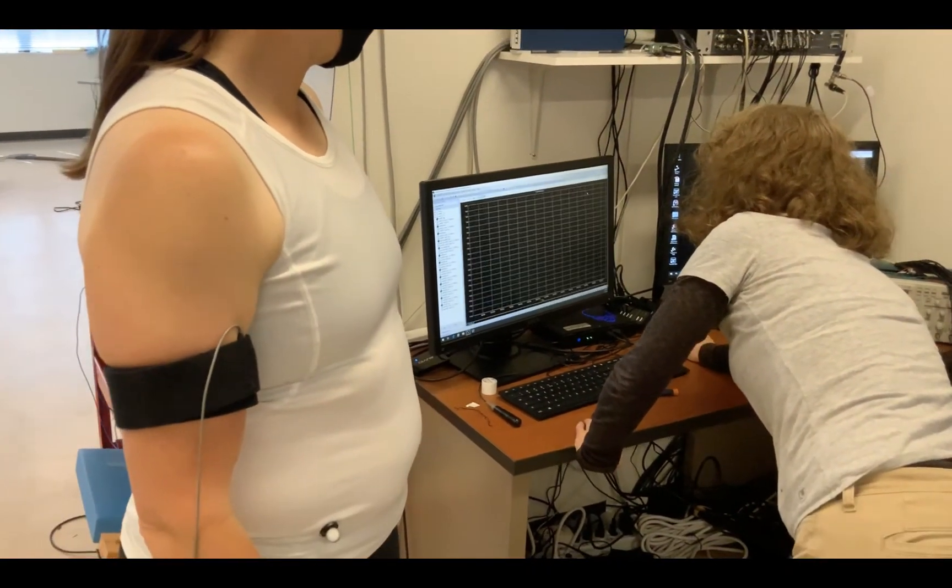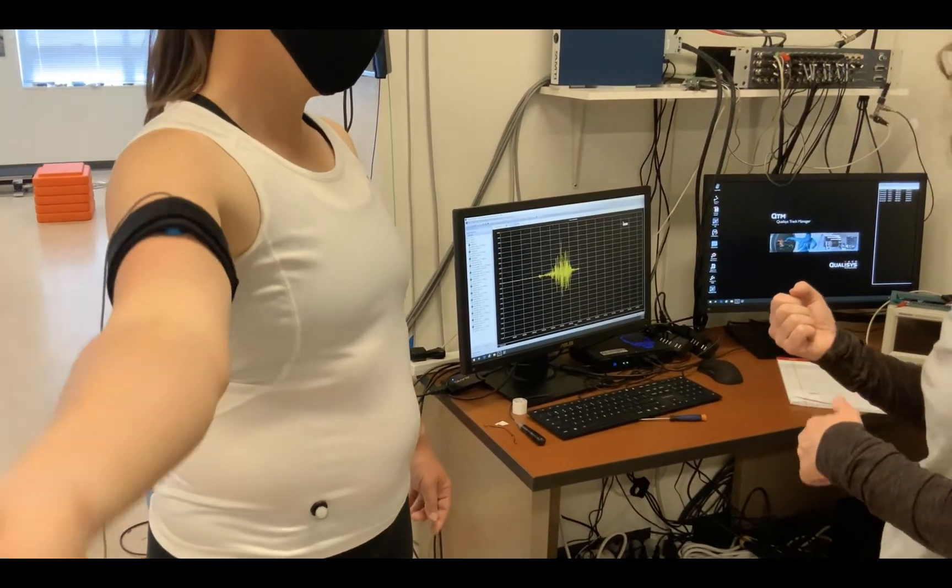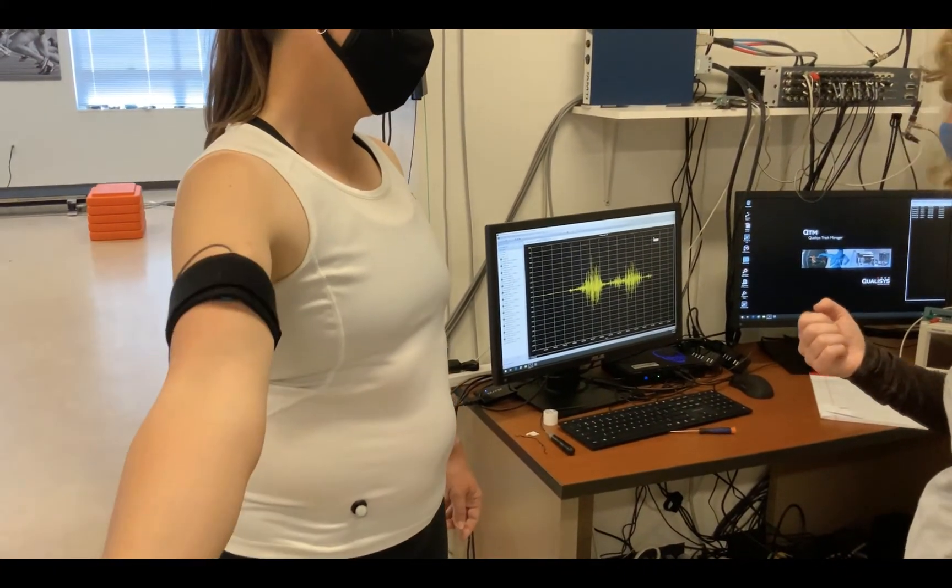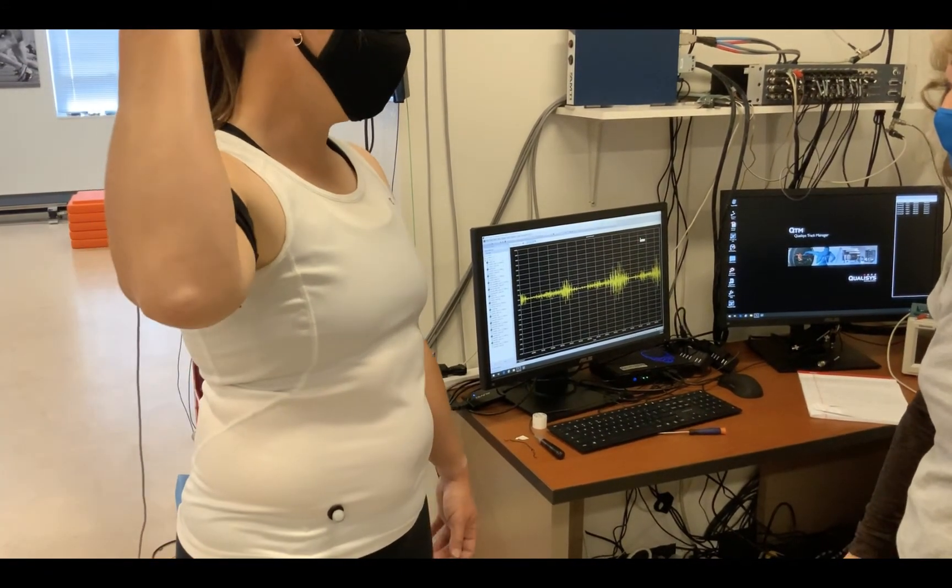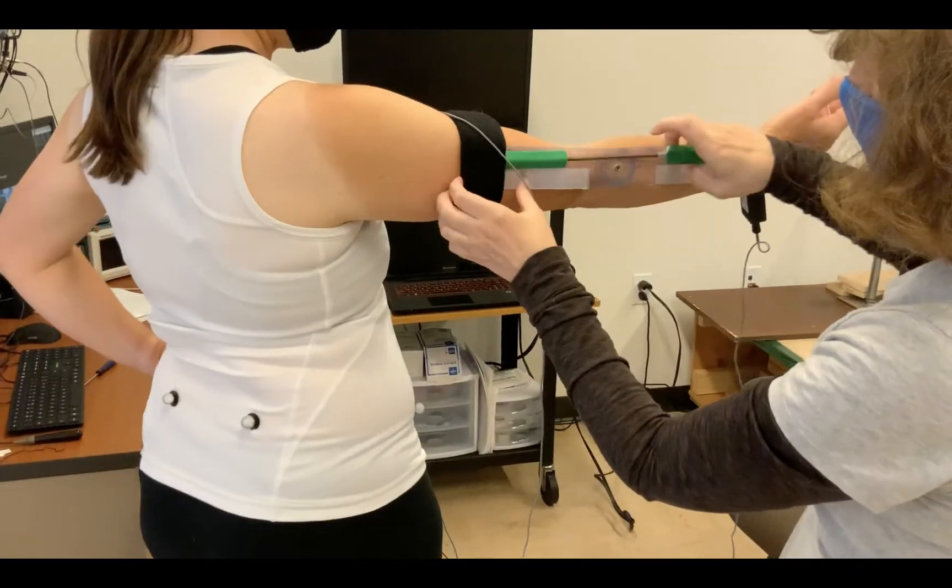Once you've got the sensor in place, you check to make sure that you get good data. So here the subject is flexing and you can see that as she flexes her biceps muscle you get a nice signal there, that noisy looking thing.